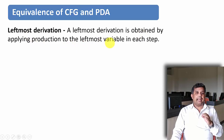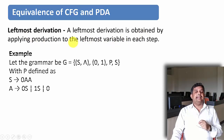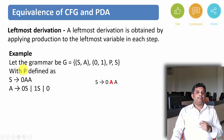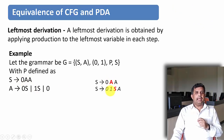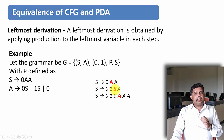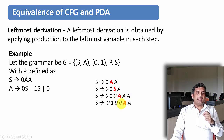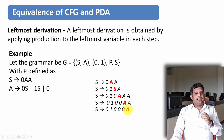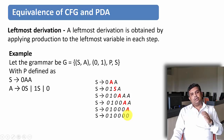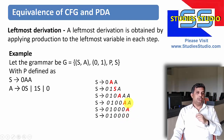A leftmost derivation is obtained by applying production to the leftmost variable in each step. The starting symbol is 0AA and its leftmost variable is A. For A, I can substitute 1S. Here in this string, S is again the leftmost. Again for S, I want to substitute 0AA. In this, A is the leftmost. For A, I can write 0. And after that, A is leftmost. For this A, if I substitute 0, again the last A is left out — this is the leftmost. So for this A, if I substitute 0, I will get the string 010000.